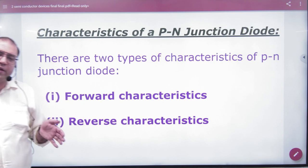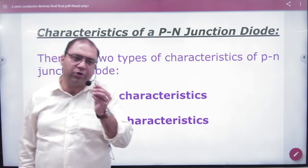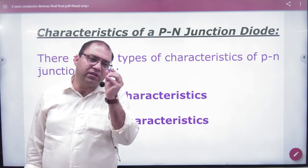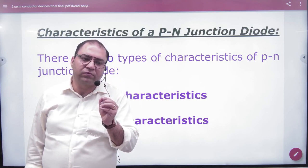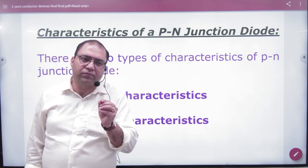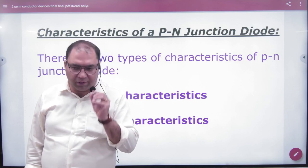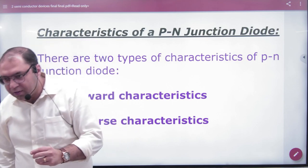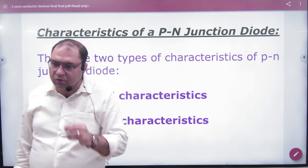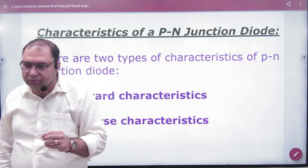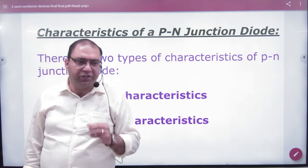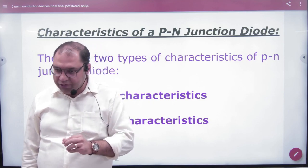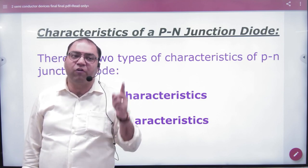Before we do, if the battery in the forward biasing, what do we call the battery potential? In the forward biasing, what do we call the battery voltage? What do we call forward biased voltage? Forward biased voltage. What do we call the current? Forward current.